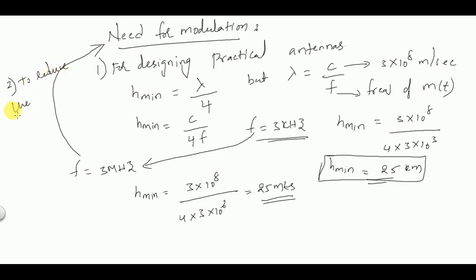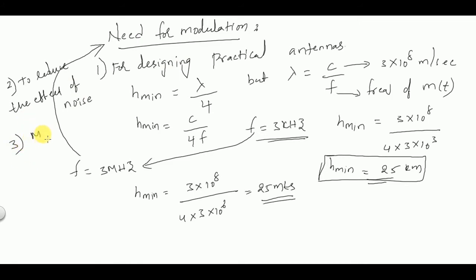The second reason for modulation is to reduce the effect of noise. We will discuss later how noise can be reduced using modulation. The third reason is multiplexing of signals.